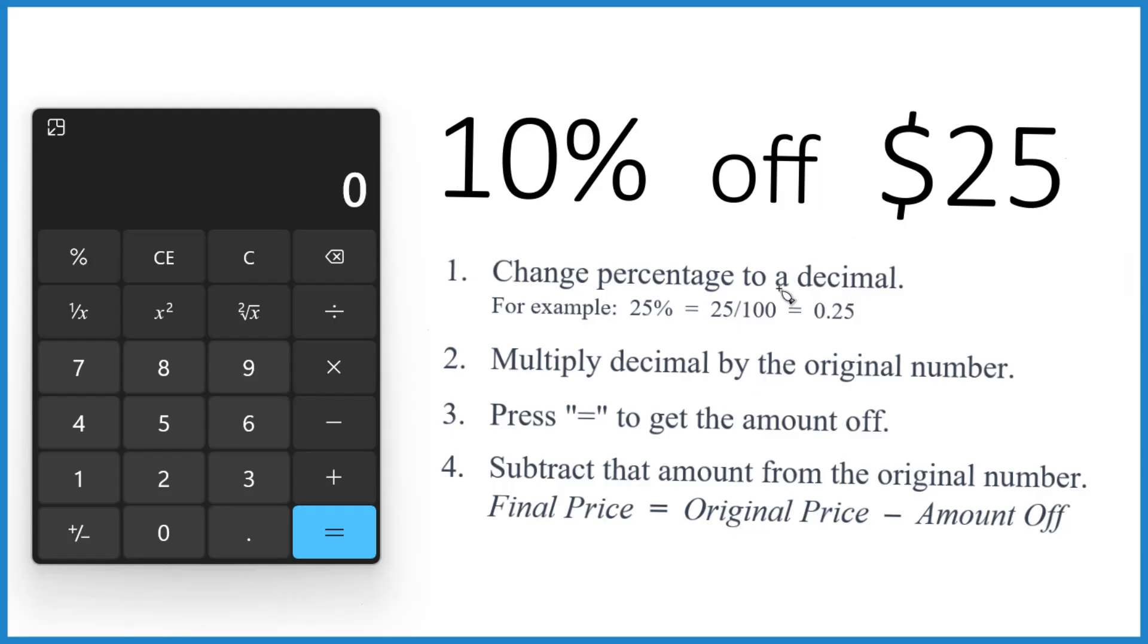First thing, let's change that percentage to a decimal. So we take 10, that's the 10%, we divide it by 100, and that's gonna give us a decimal, which is 0.1.